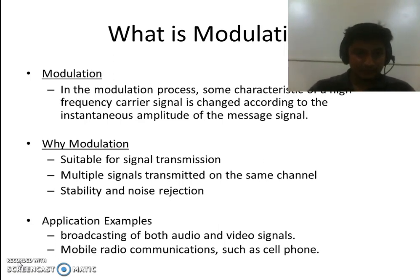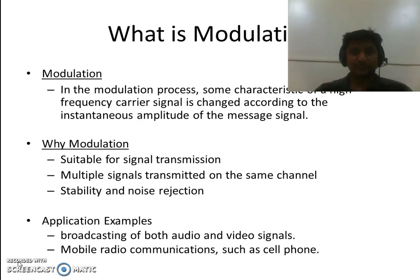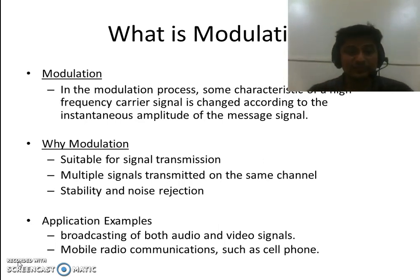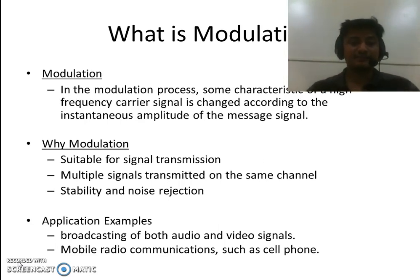We can also increase the stability and noise rejection ratio of our channel using modulation. Amplitude Modulation is typically used in the broadcasting of audio and video signals, as well as in radio transmissions such as cell phones.